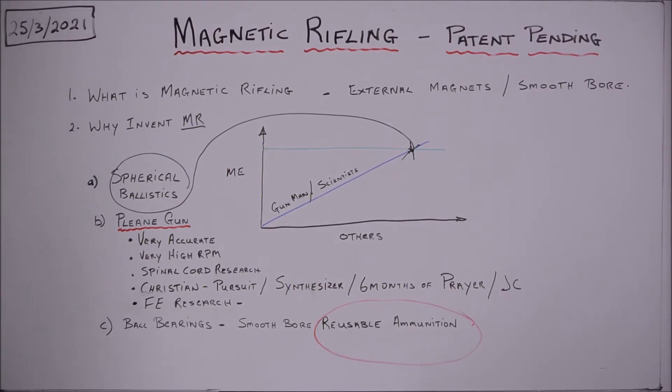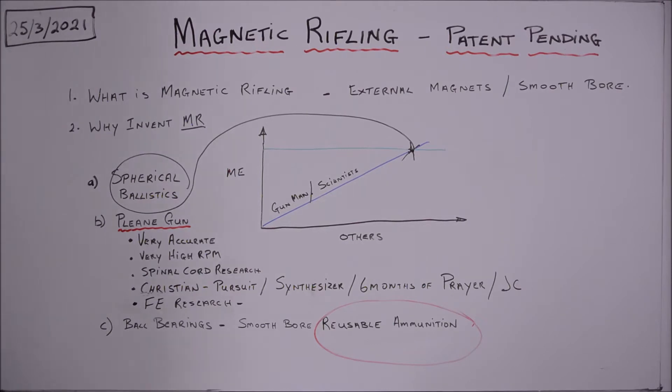So what is magnetic rifling? Magnetic rifling is basically spinning a projectile down a smoothbore with external magnets. In other words, we just remove the grooves and lands from an existing rifle and we use the external magnets to spin the projectile.